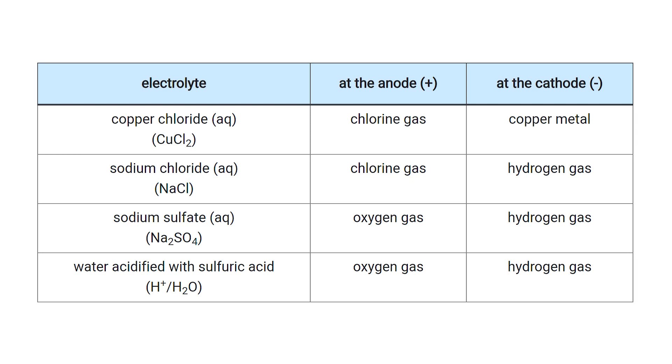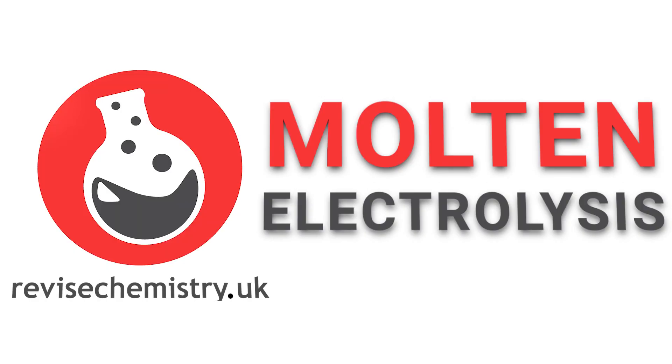Remember, at the anode we either produce a halide; if there are none of those present, we will then produce oxygen gas. At the cathode, we will produce the least reactive of either hydrogen or the metal. Most metals are more reactive than hydrogen, so trying to extract them using electrolysis of solution is not going to be very helpful.